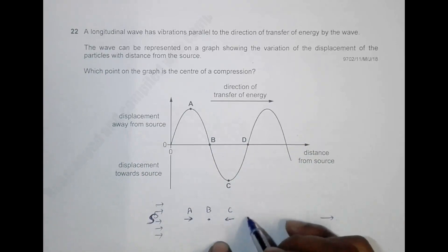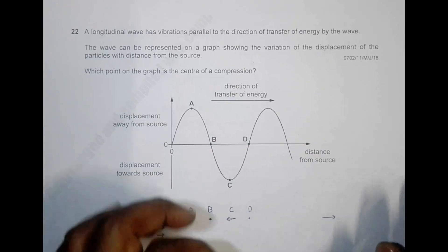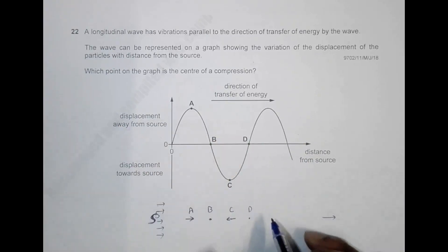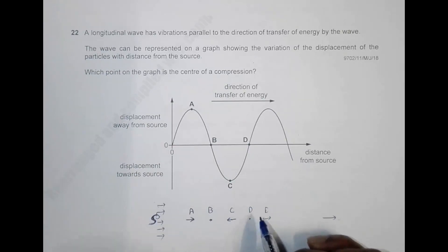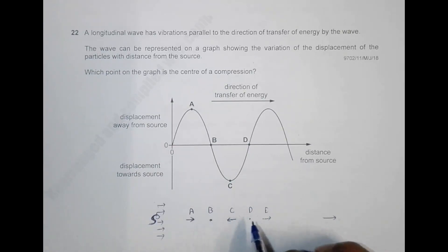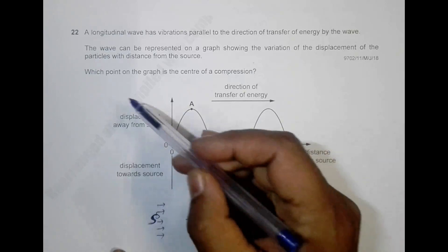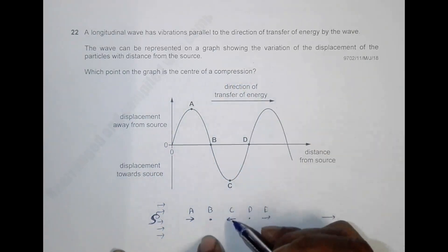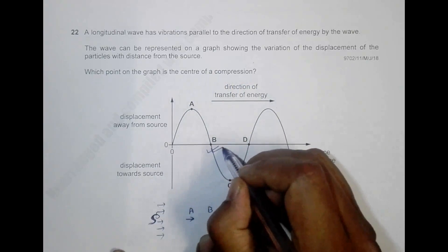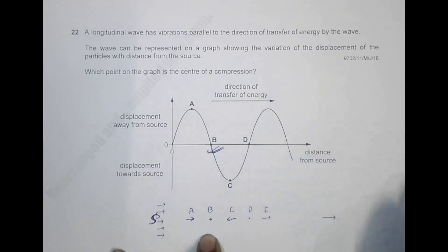At point D, particles are moving away from it on both sides, so D is the center of the rarefaction. Therefore, B is the center of compression and D is the center of rarefaction. As the question asks for the center of compression, the answer is point B.